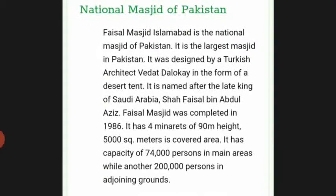Faisal Masjid in Islamabad is the national mosque of Pakistan and the largest masjid in the country. It was designed by Turkish architect Vedat Dalokay in the form of a desert tent. It is named after the late King of Saudi Arabia, Shah Faisal bin Abdulaziz. Faisal Masjid was completed in 1986, has 4 minarets of 88 meters height, a covered area of 5,000 square meters, and a capacity of 74,000 persons in the main hall plus another 200,000 in adjoining grounds.